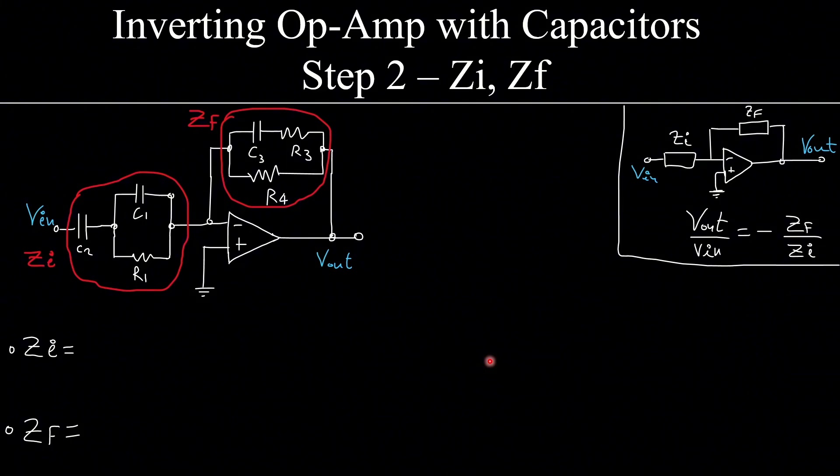Now, step number two is to find these two impedances. How much is Zi? Well, I can start with either one, it doesn't really matter. Zi is, in this case, the impedance of the capacitor plus the impedance of the capacitor, this one, in parallel to this resistance. How much is the impedance of the capacitor? 1 over Cs. How much is the impedance of a resistor? It's the value of the resistance, R1 in this case.